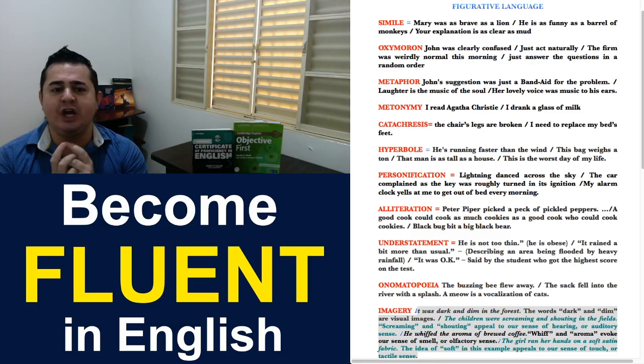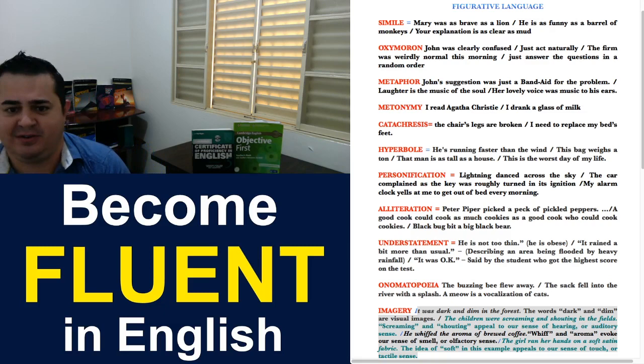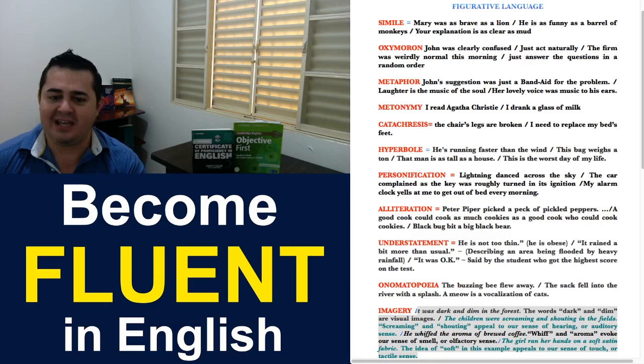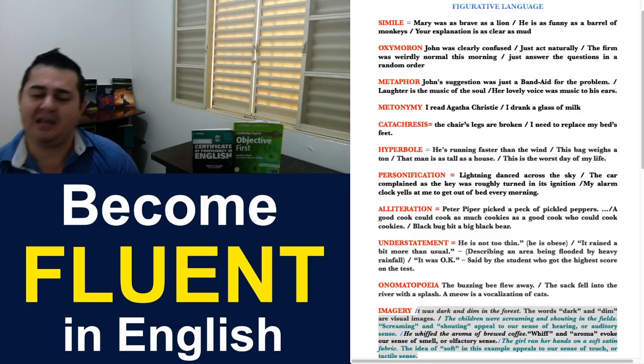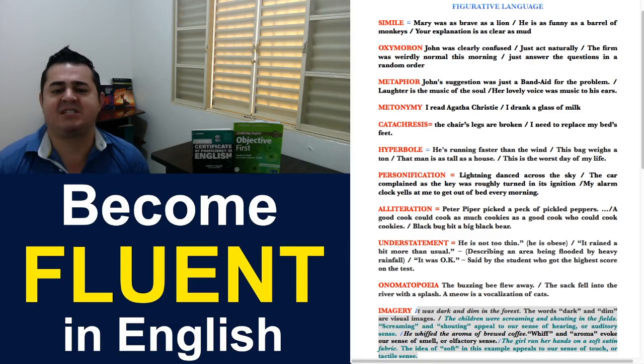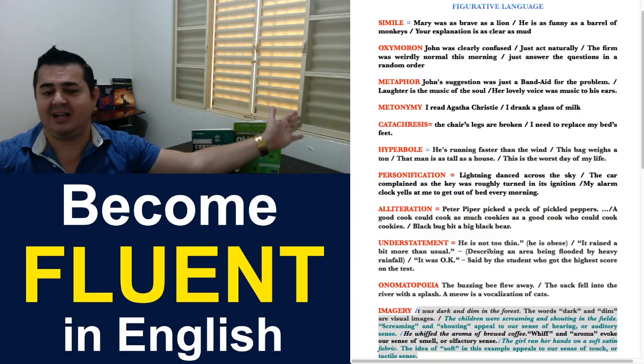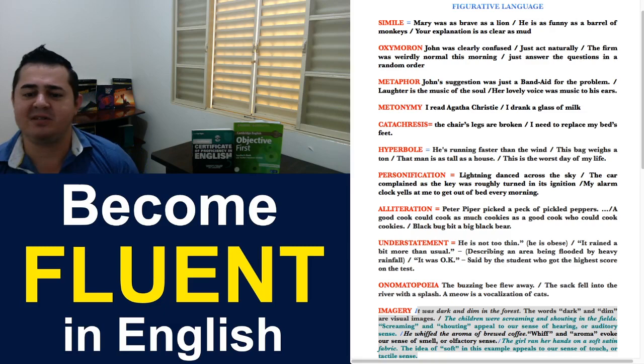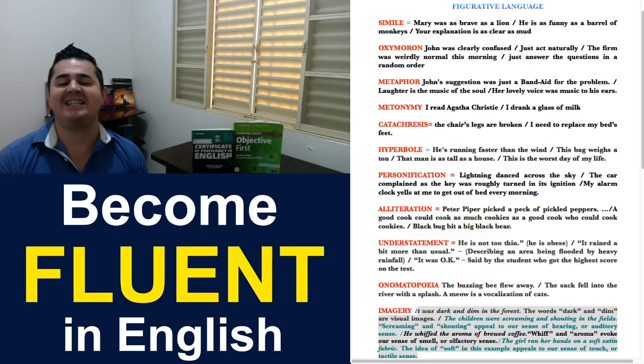Next one, onomatopoeia. When you use words that include similar sounds to the noise the words refer to. So, you say, the buzzing bee flew away. Buzz is the sound of a bee. So, you're using the sound of a bee to say what the bee did. The sack fell into the river with a splash. And splash is the noise of water spreading all over. A meow is a vocalization of cats. So, every time cats want to talk to people, they say meow, which is the sound. So, the sound of animals, the vocalization of animals are called onomatopoeia. That's the name we give in English.